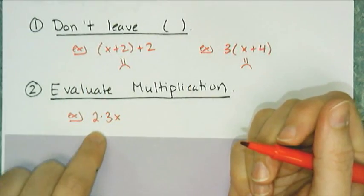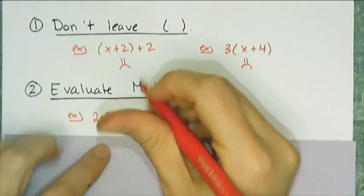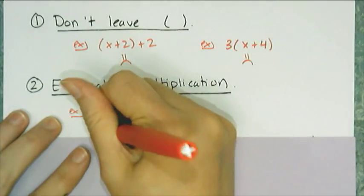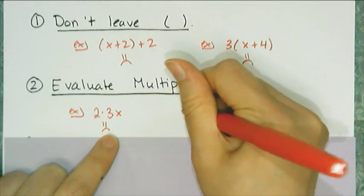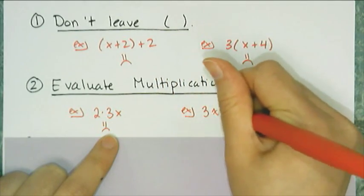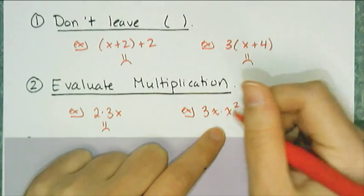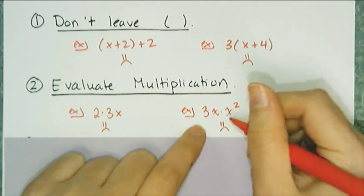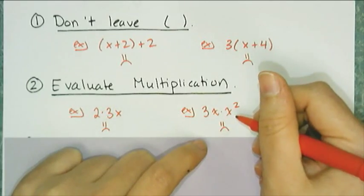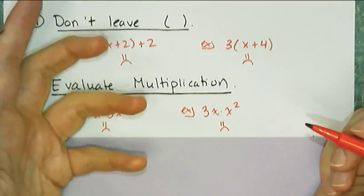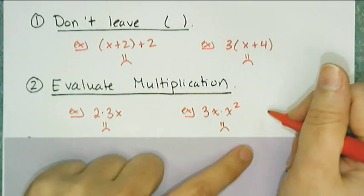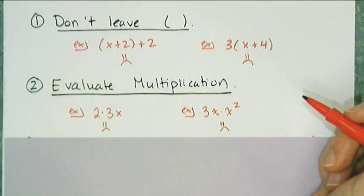Because I can multiply 2 times 3 and get 6, leaving 2·3 is a frowny-face answer. Similarly, 3 times x times x² is something I don't want to leave, because x times x² can be simplified. Using the definition of exponents, I can expand x² as x·x, giving x·x·x, which can be rewritten as x³.